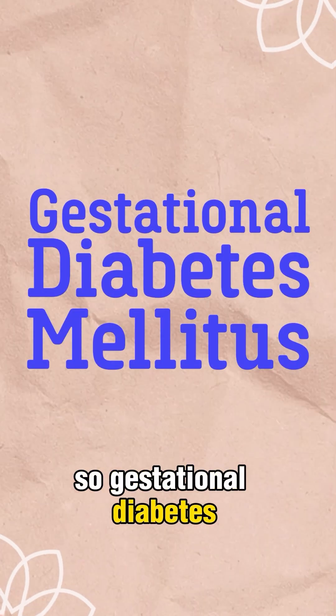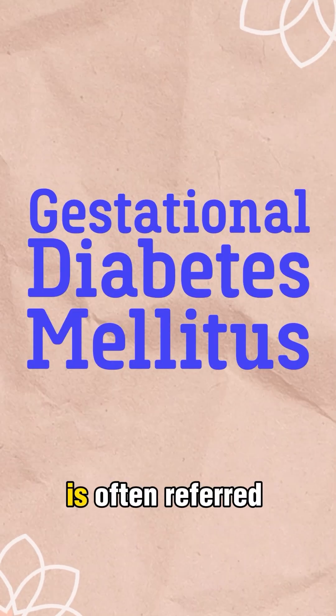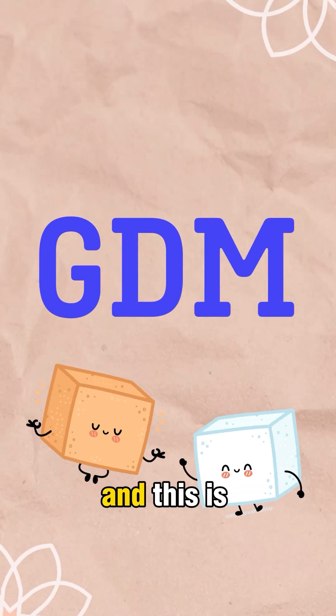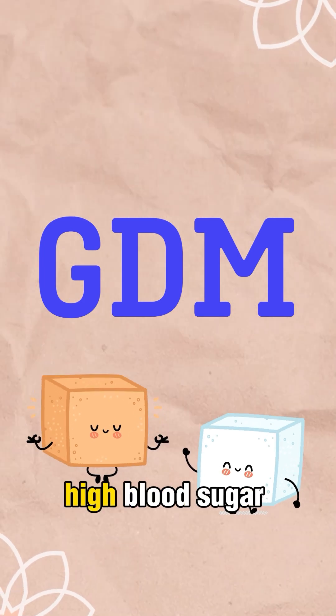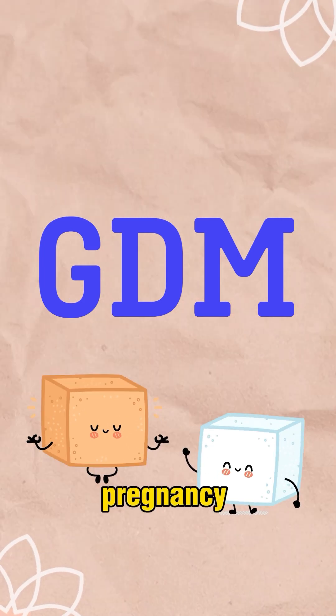Gestational diabetes mellitus is often referred to as GDM, and this is high blood sugar that develops during pregnancy.